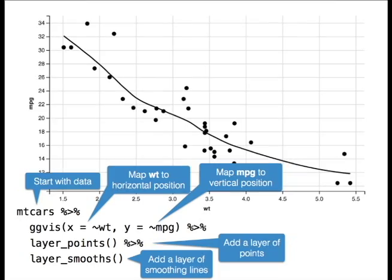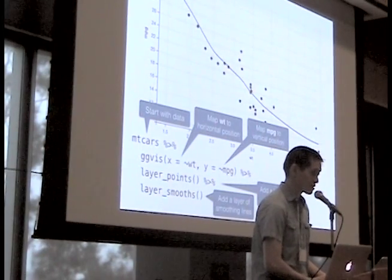So Grammar of Graphics. If you've used ggplot2 before this should look familiar, it's similar but there are some important differences. This is a typical scatter plot with a loess smooth line. The way to use it is you start with the data, then you pass it to ggbiz using this funny operator, and then you tell it to map this column or variable weight to the horizontal position and map mpg to the vertical position of the points. Then we use an operator which I will explain later and add a layer of points and finally add a layer of smoothing lines, or in this case it's just one smoothing line.